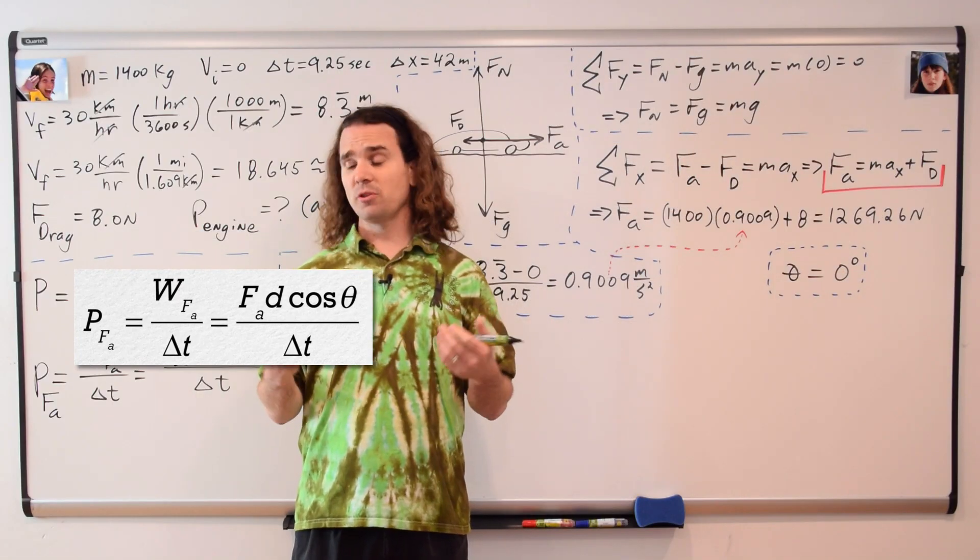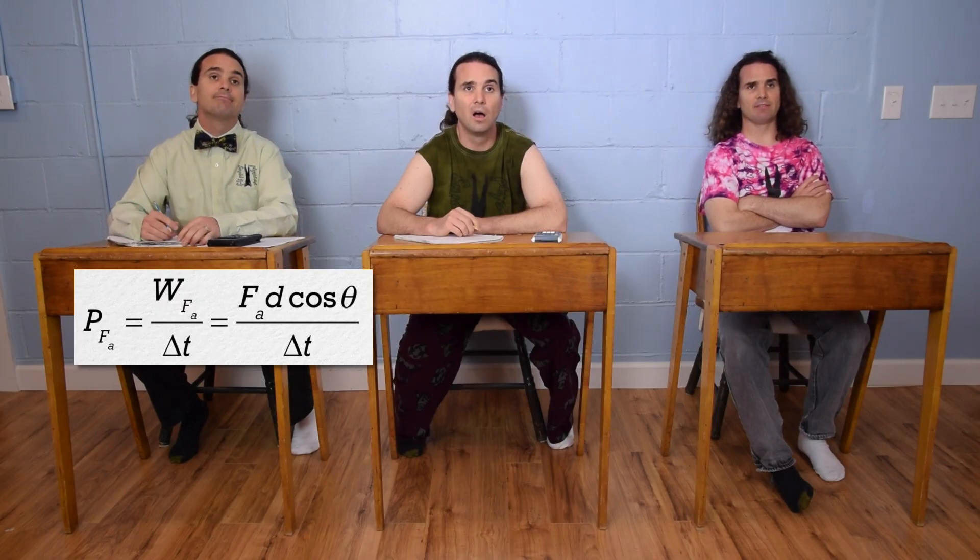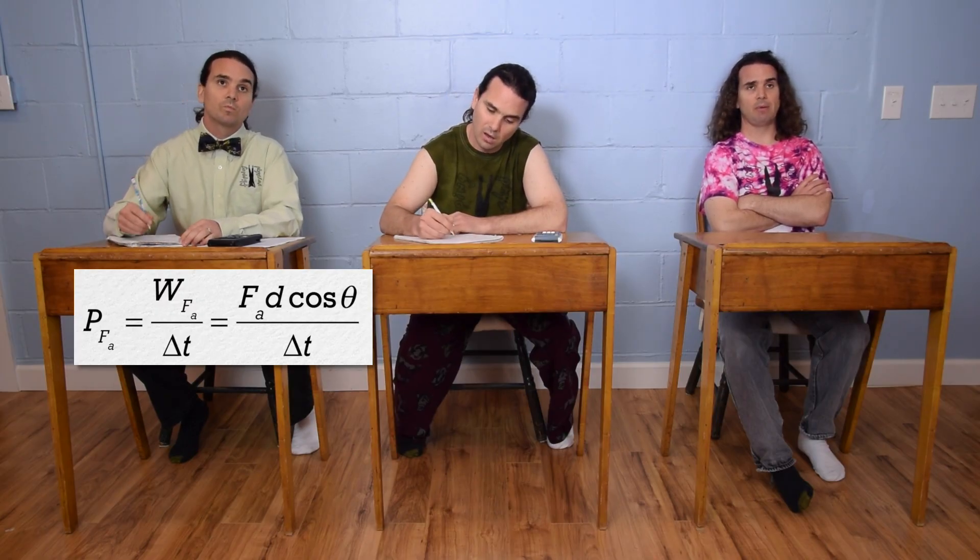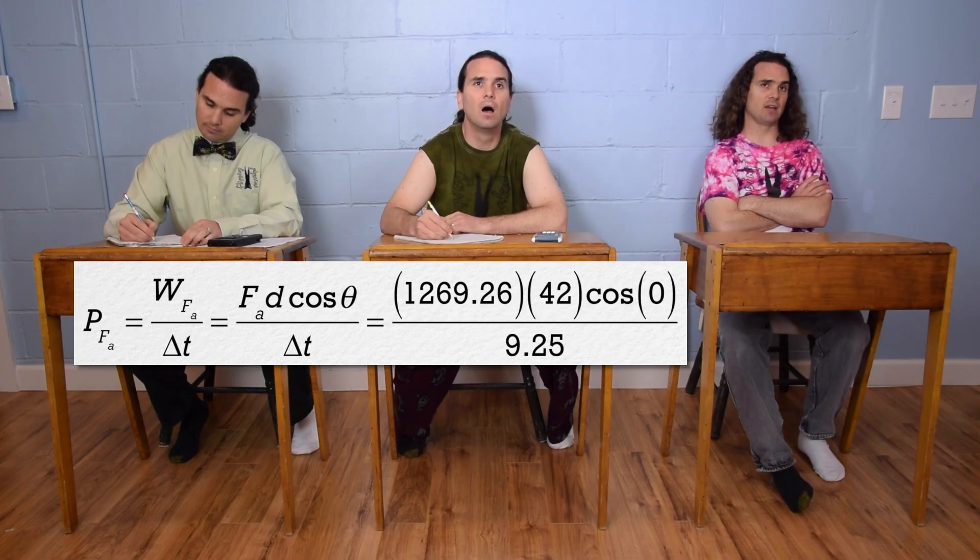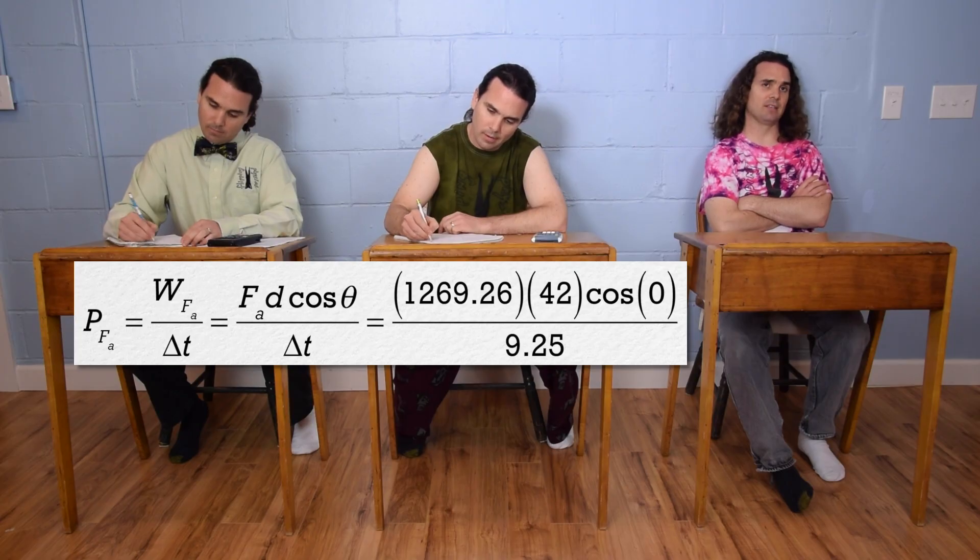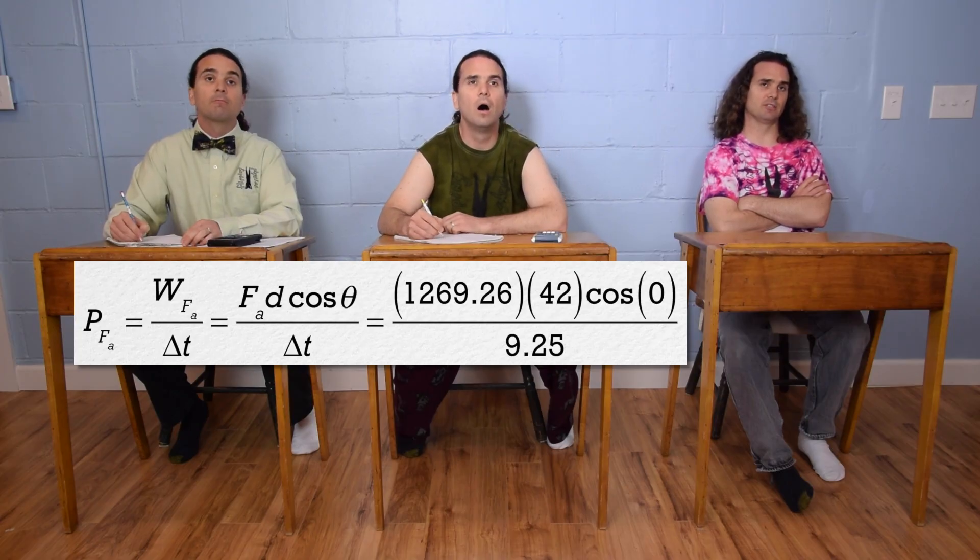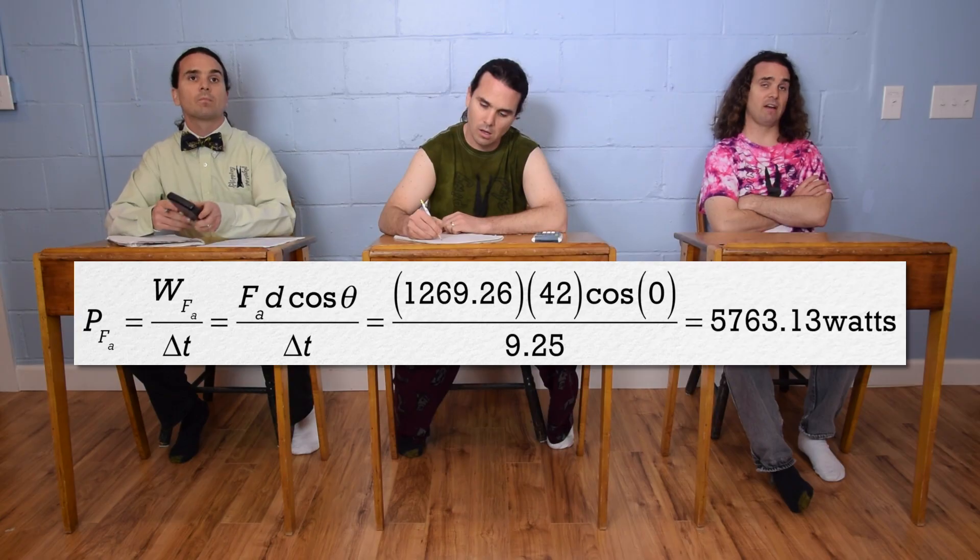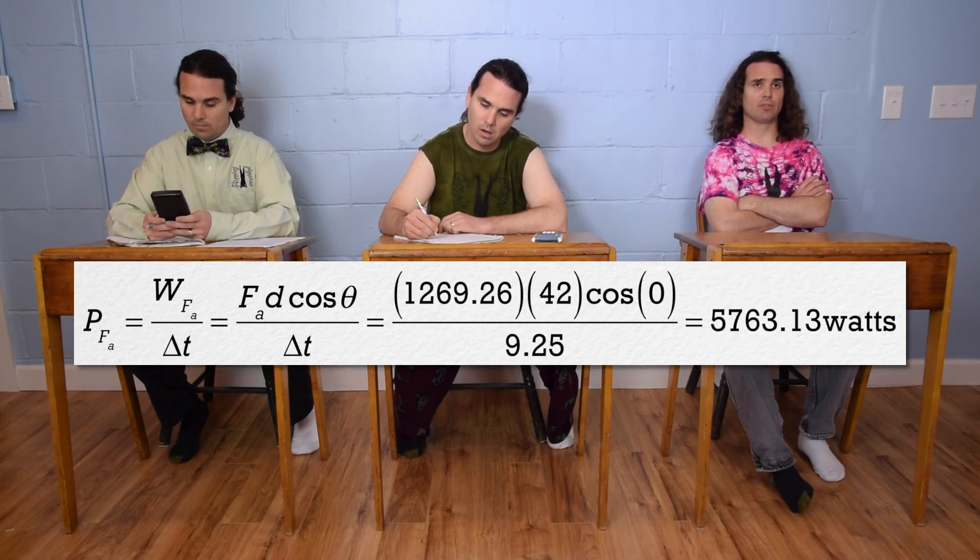Bo, could you please finish the problem? I can substitute back into the equation we have for power. So, power equals 1269.26 times 42 times cosine of zero degrees, all divided by 9.25, which is 5763.13 watts.